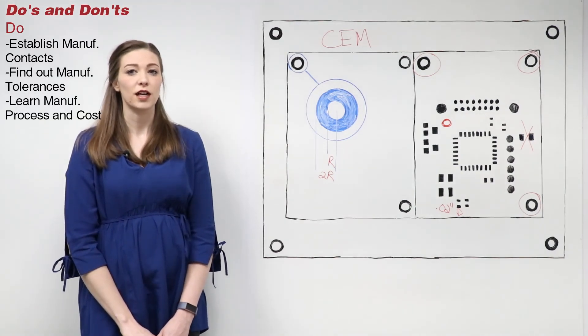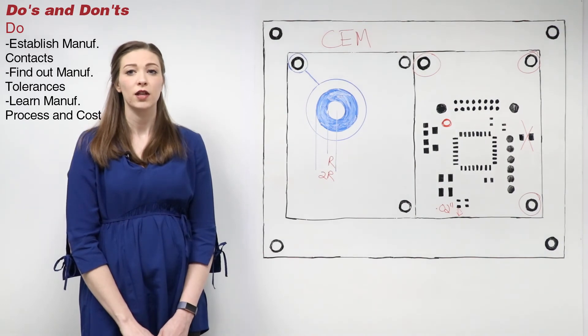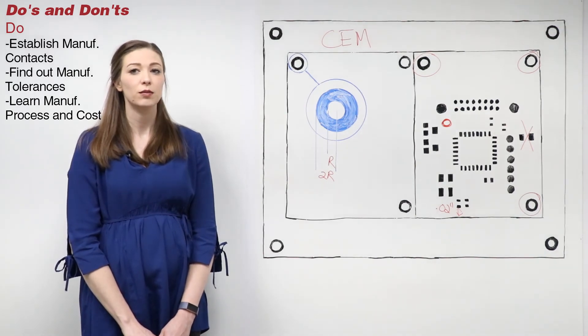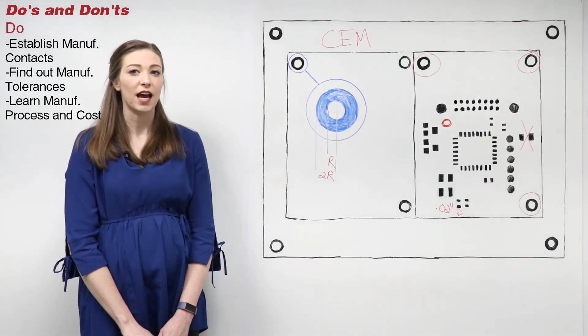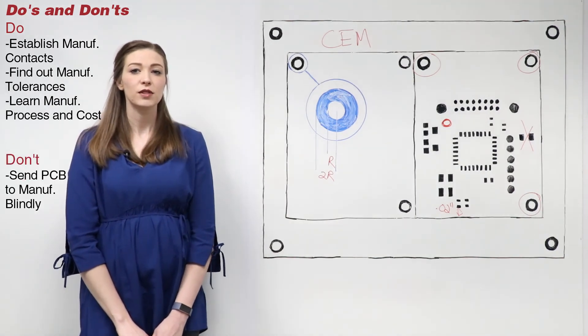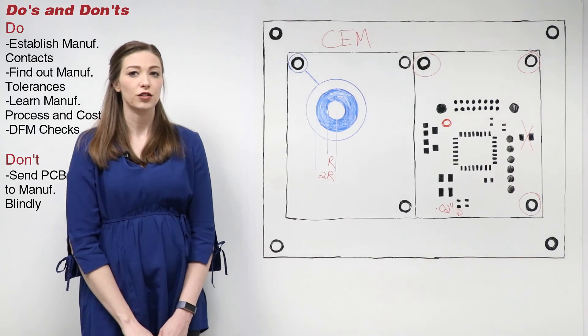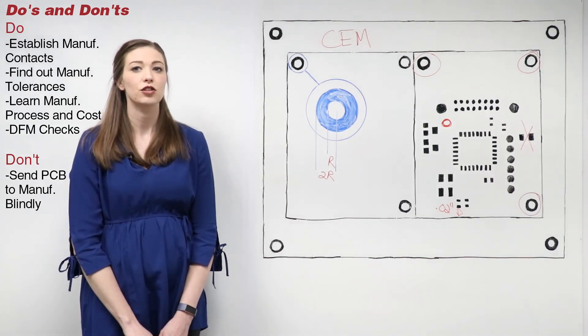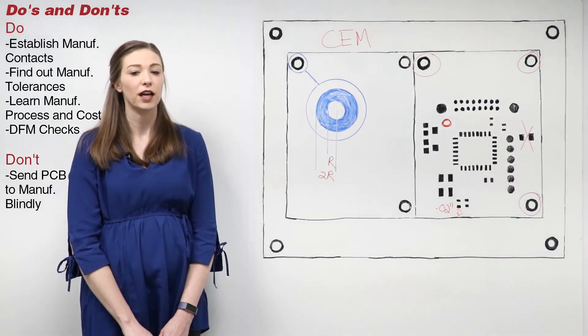Do learn about the manufacturing process and the associated costs. What is involved in making your PCB double sided? How much cost does it add? Don't send your board to manufacturing blindly. Some software offers DFM checks and constraints. Take advantage of these to ensure there are no issues or delays during manufacturing.